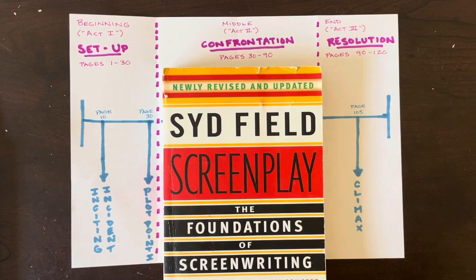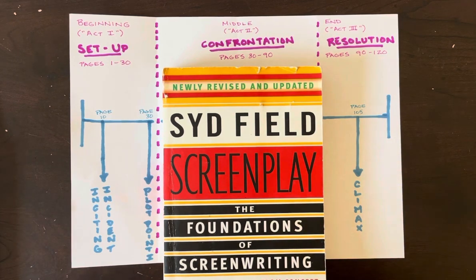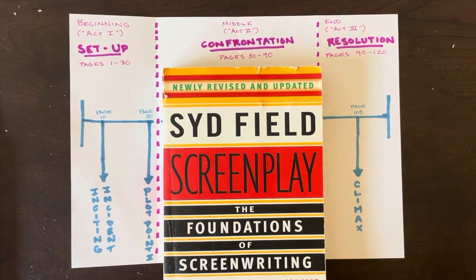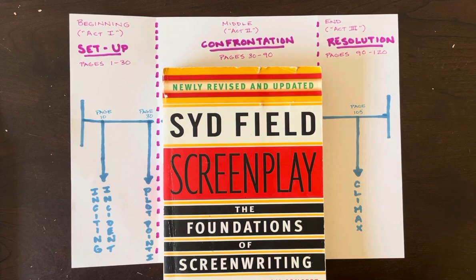However, since this is a screenwriting class, we now need to shift the focus of our discussion to cinematic structure. One of the most influential forms of cinematic structure for the last 40 years or so has been the late Sid Field's paradigm, which he acknowledged was based on the lessons he learned from folks like Aristotle and Freytag.